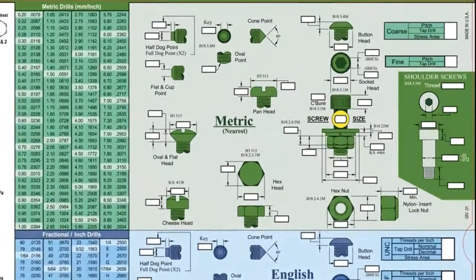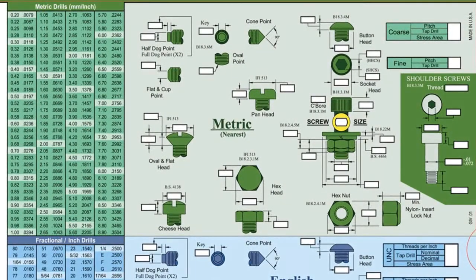At the top of the chart, metric fasteners ranging in size from 1.6 mm to 24 mm are highlighted in green.